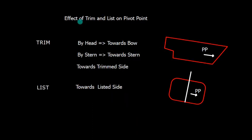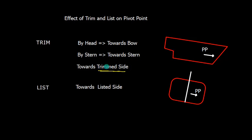Let us discuss the effect of trim and list on pivot point. In case of trim, the pivot point is going to shift towards the trimmed side. So with a forward trim, the pivot point shifts forward; if the trim is by the stern, the pivot point shifts aft. Similarly, in the case of list, the pivot point shifts towards the listed side.